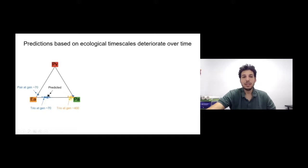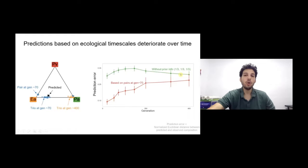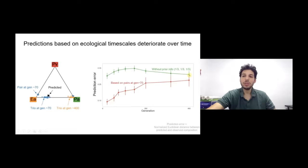Looking at all trios, the red line indicating prediction error based on pair composition at generation 70 starts out fairly accurate, but over time the error increases. By generation 400 it's quite similar to the green line, which indicates what the prediction error would be with no prior information at all. So after 400 generations, knowing the pair composition at generation 70 is almost as uninformative as knowing nothing.